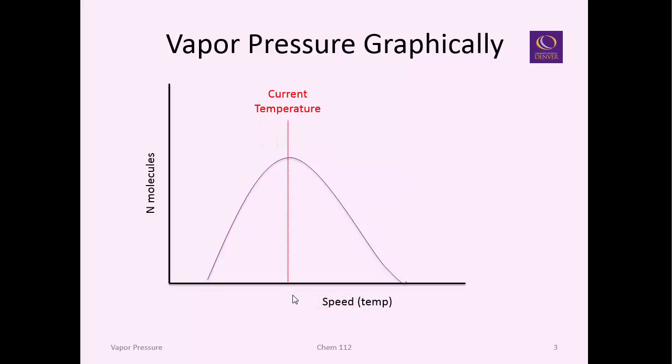If you looked at the current temperature, the average or the bulk of the molecules are traveling at this temperature. That's why if you put a thermometer in that solution you would get a temperature of, say, room temperature 20°C. But statistically there's molecules that are moving a little bit slower and also molecules that are moving a little bit faster.